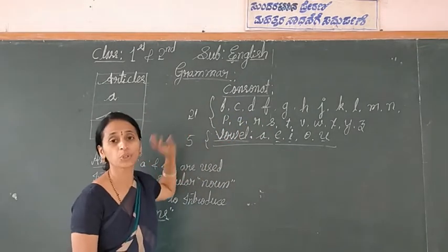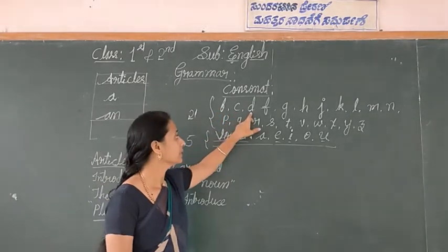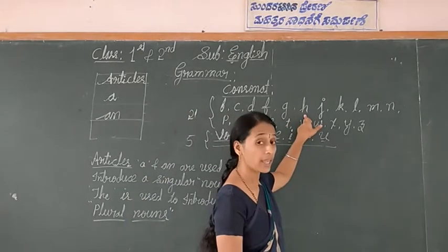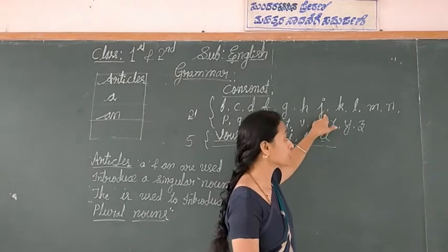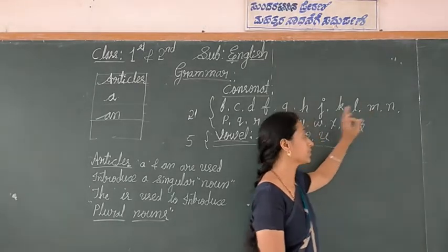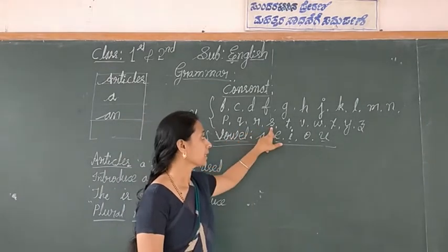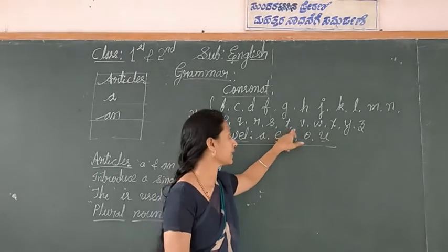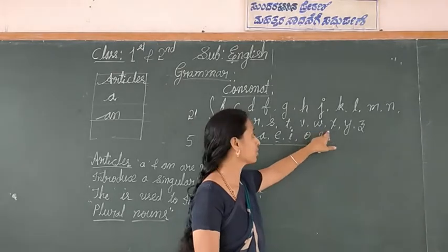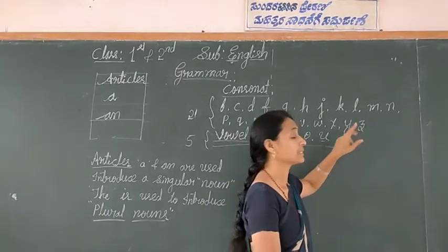In 21 consonants we have to use 'a'. For example: a ball, a bird, a cat, a dog, a fish, a goat, a hawk, a hat, a joker, a kite, a lemon, a mango, a net, a parrot, a queen, a rabbit, a sweet, a tree, a lion, a watch, a yard, a zoo.